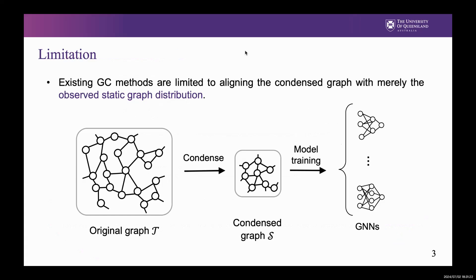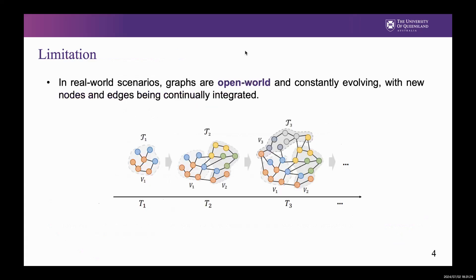Unfortunately, assuming a large graph stays unchanged contradicts the dynamic nature of graph data in the real world. New nodes and classes continuously emerge and are integrated into the existing graph structure. Such addition of nodes often introduce novel patterns that are different from those observed.